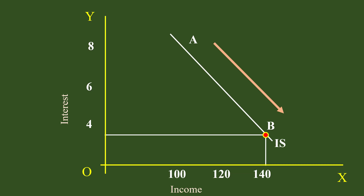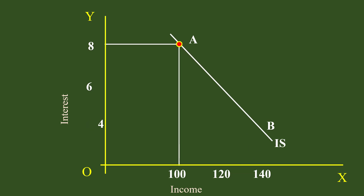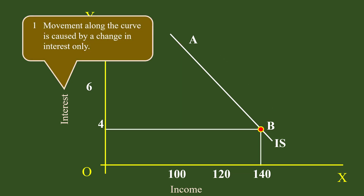The reverse is also equally true. When interest increases from 4% to 8%, the income decreases from Rs.140 to Rs.100. The goods market moves from B to A. This is also movement along the curve. The finer points here are: 1. Movement along the curve is caused by a change in interest only.